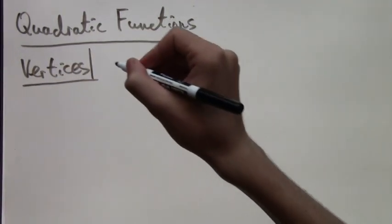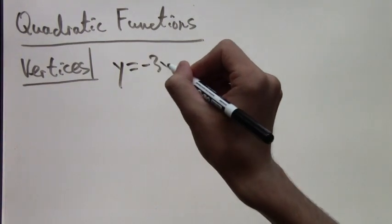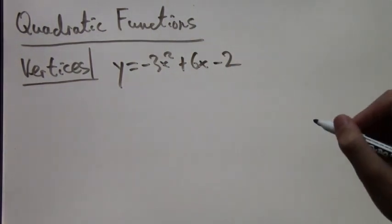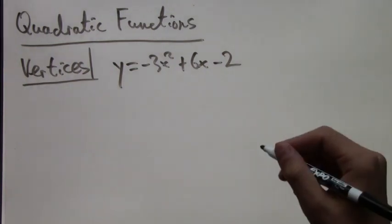Well, this depends on which form of quadratic function you get. So let's just take the first example in the standard form: y equals negative 3x squared plus 6x minus 2.